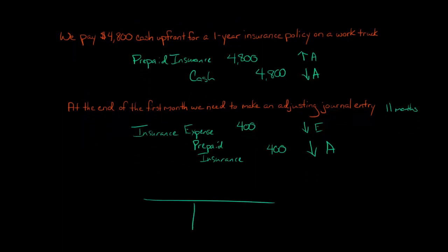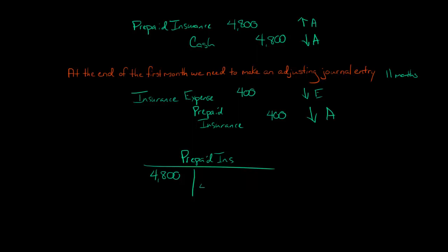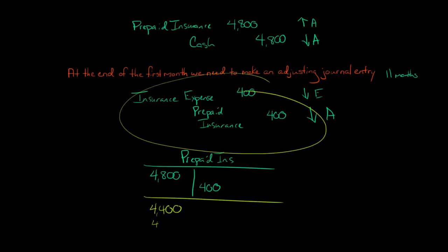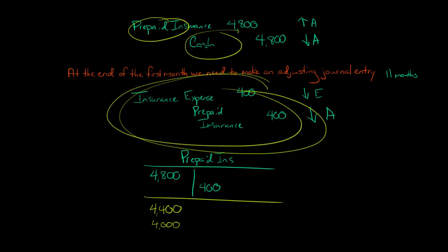Let me show you a quick T-account. We've got our prepaid insurance, and at the start we begin with $4,800. After one month, we've credited prepaid insurance for $400, so we're at $4,400. That's the amount shown on the balance sheet at the end of the first month. After two months, we make the entry again and it goes to $4,000. At the end of the year, it goes down to zero. We originally swapped one asset for another — cash for prepaid insurance — and then as time passes the insurance policy is used up, and we make this adjusting journal entry to expense the asset.